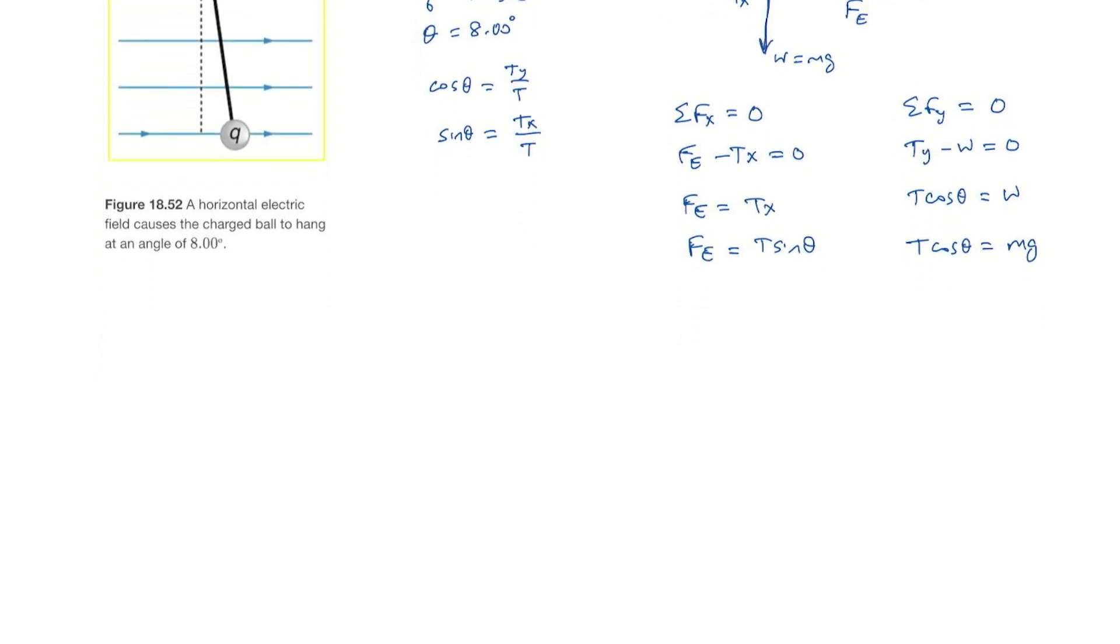Alright, so we can divide the equations. Let's see, we're going for e. We can say Fe is q times e, that will be t sine theta. So let's do qe divided by mg will be t sine theta divided by t cosine theta. We don't know the tension and now we've eliminated it because it's in the numerator and denominator.